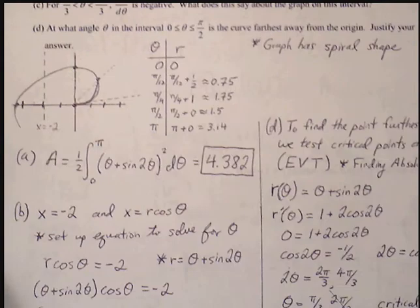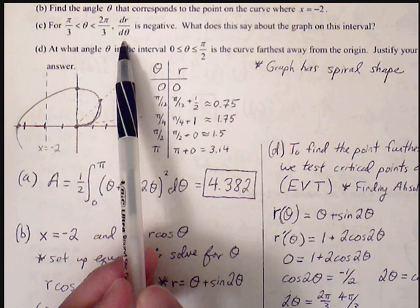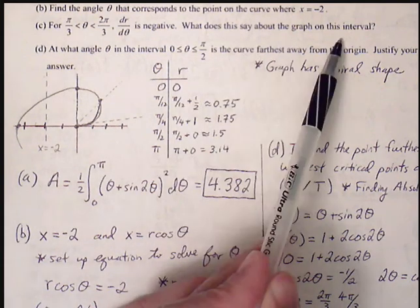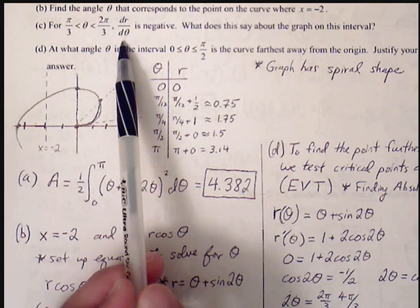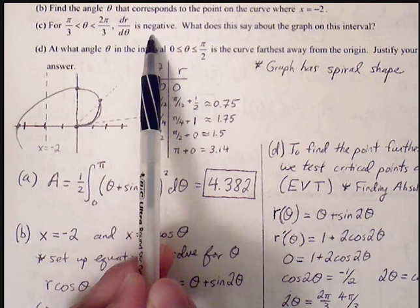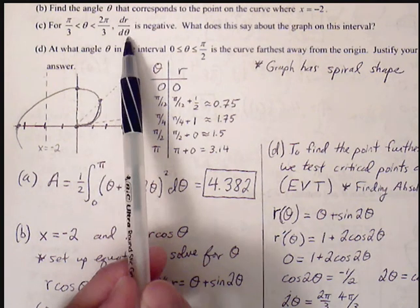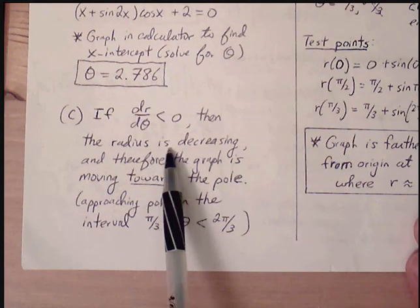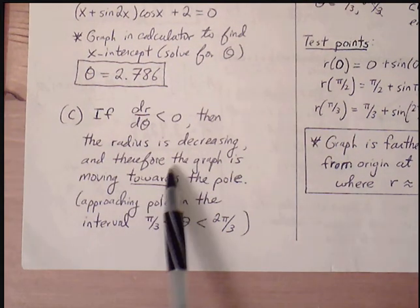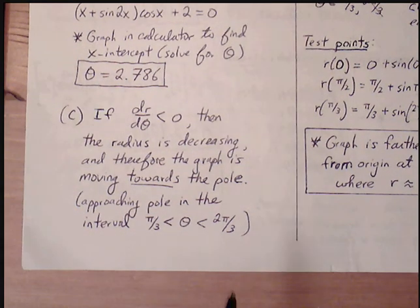Part c: Between pi over 3 and 2 pi over 3, dr over d theta is negative. What does this say about the graph? If the change in radius over change in theta is negative, the radius is decreasing — getting smaller. Therefore, dr/d theta being negative means the radius is decreasing, and the graph is moving toward and approaching the pole on the interval from pi over 3 to 2 pi over 3.